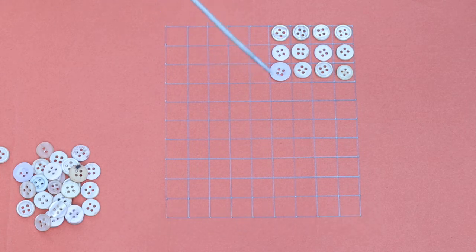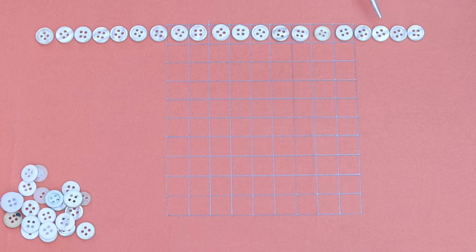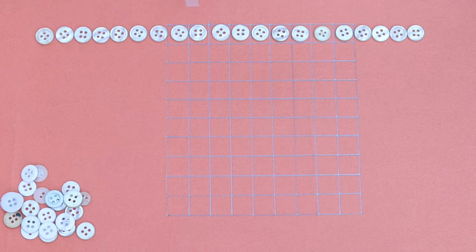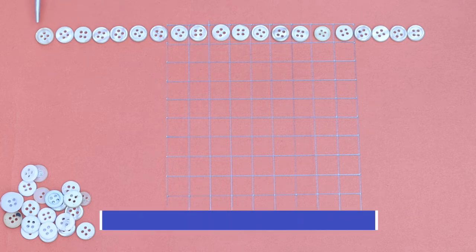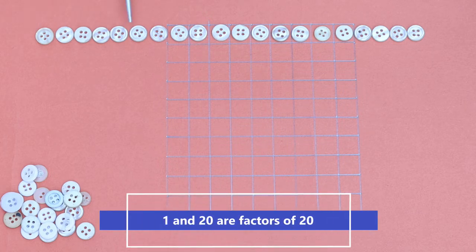Now I have taken twenty buttons. Let us count: one, two, three... twenty. They have been arranged in one row, so twenty buttons in one row means one twenty is twenty and twenty ones are twenty.